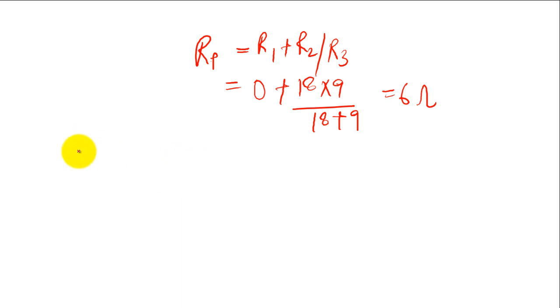Now, we find the total current in the circuit which IT is equals to E by RT which is equals to 60 by 6 is equals to 10 ampere. This means that the current crossing R1, IR1, is 10.